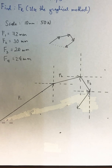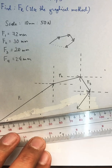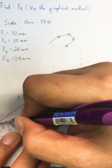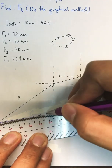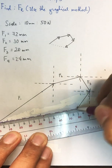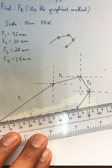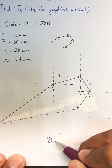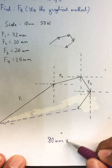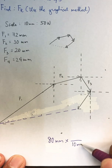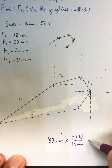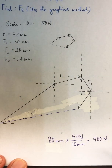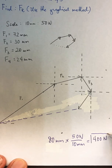We move on to step four: connect the head of the last vector to the tail of the first vector — this will be our resultant force. Using this violet colored pen, we get the measurement, which is around 80 millimeters. We then scale it back: 10 millimeters to 50 newtons. This gives you approximately 400 newtons, and that is our resultant.